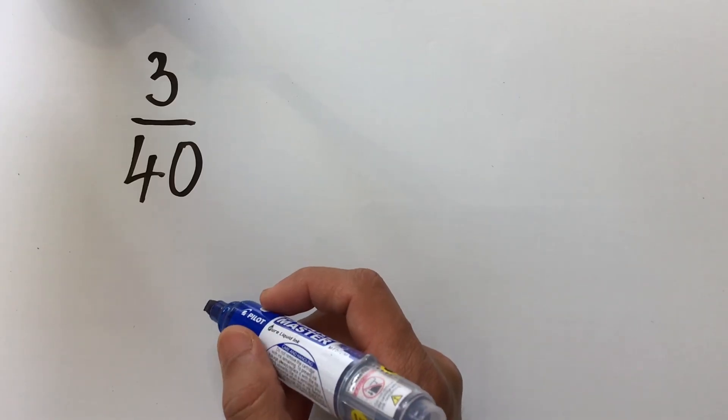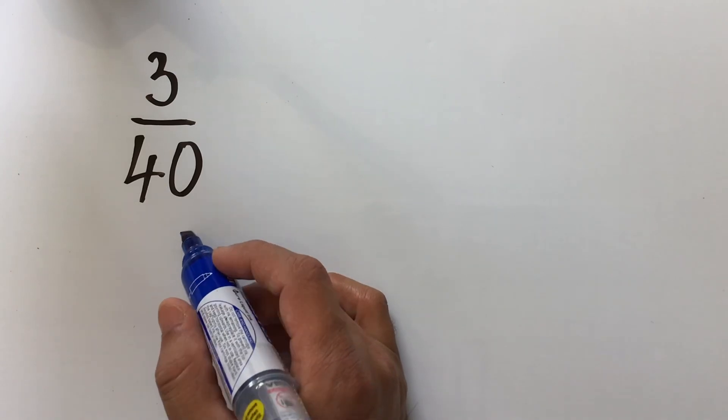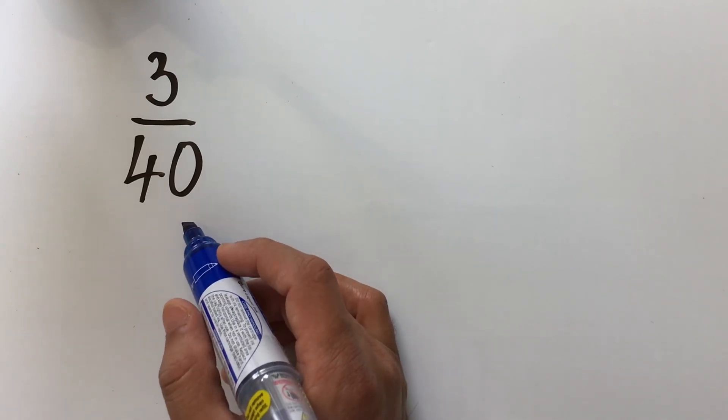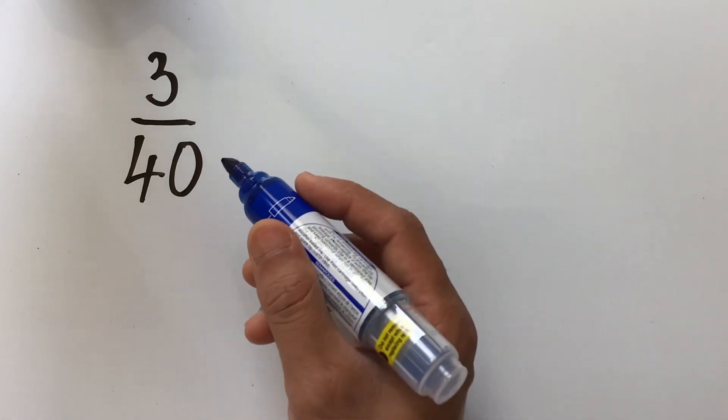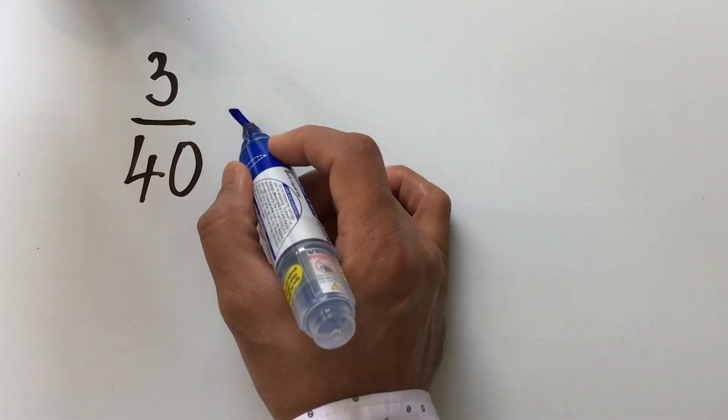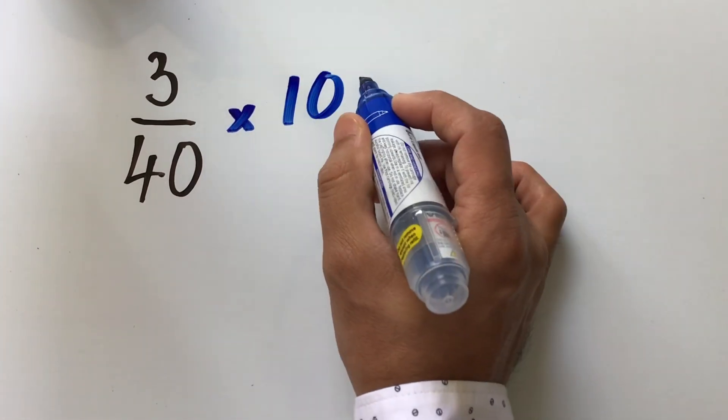Now, as you can see in this example, we have 40 in the denominator. It is not easy to convert 40 into 100. So, in the second method, what we do is, we need to multiply the fraction with 100 percent.